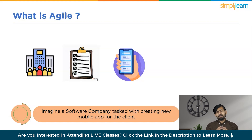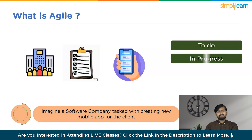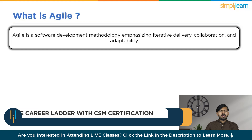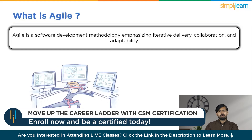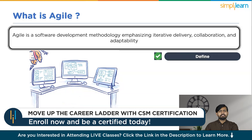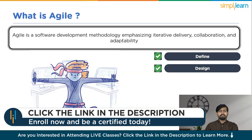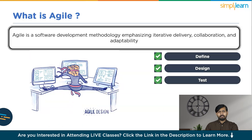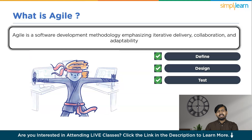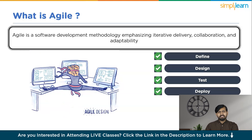Now, what's the technical definition of Agile? Agile is a software development methodology emphasizing iterative delivery, collaboration and adaptability. It prioritizes satisfaction through frequent delivery of valuable software increments, promoting close collaboration between cross-functional teams and stakeholders. Agile fosters flexibility by embracing changing requirements and encourages self-organization and continuous improvement within the development team.